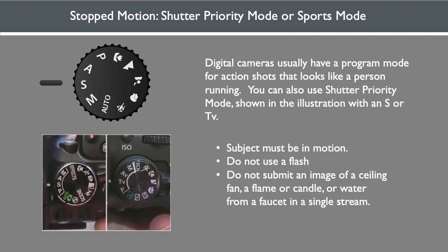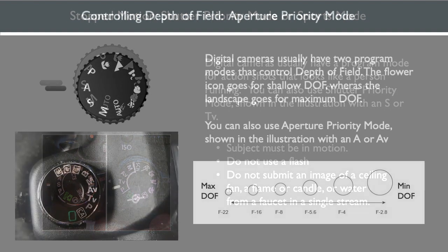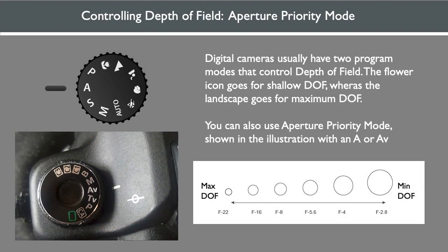For taking stopped motion photographs, try shutter priority or sports mode on your DSLR. Digital cameras usually have a program mode for action shots that looks like a person running. Be sure you have ample lighting so you can get a fast enough shutter speed. Digital cameras usually have two program modes that control depth of field. The flower icon goes for shallow depth of field, whereas the landscape goes for maximum depth of field. You can also use aperture priority mode, shown in the illustration with an A or AV.